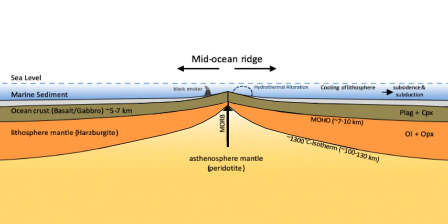At first, the ridge was thought to be a phenomenon specific to the Atlantic Ocean. However, as surveys of the ocean floor continued around the world, it was discovered that every ocean contains parts of the mid-ocean ridge system. Although the ridge system runs down the middle of the Atlantic Ocean, the ridge is located away from the center of other oceans.